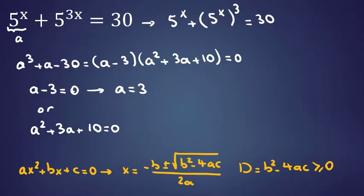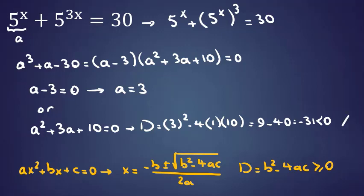The formula uses the discriminant inside the square root, which should be at least 0. If we calculate the discriminant here, it will be b squared where b is 3, so 3 squared minus 4 times a times c, where a is 1 and c is 10. This is 9 minus 40 equals negative 31, less than 0. If the discriminant is less than 0, we don't have any real answer here, so we should only consider a equals 3.